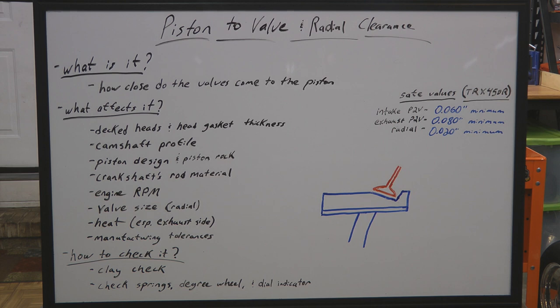There are quite a few factors that affect how close the valves come to the piston: head gasket thickness, decking your heads, large camshaft profiles, the actual piston design and piston rock within the bore, the crankshaft's rod material, engine RPM, valve size, the heat created by the combustion process, and even manufacturing tolerances. All of these things can affect your piston to valve and radial clearances.